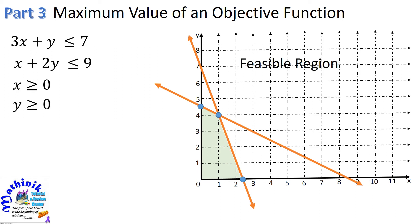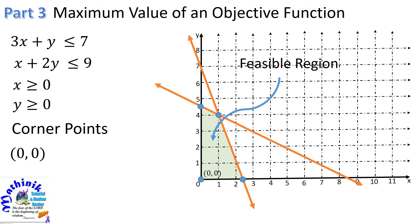For our problem, we call this the feasible region. All the coordinates of points in this region will give positive values to our objective function. To find the maximum, we will use the corner points — the intersections of the boundary equations from our constraints. The first corner point is (0, 0), the intersection of x equals 0 and y equals 0. The next is (2⅓, 0), which is the intersection of y equals 0 and 3x plus y equals 7, or just the x-intercept of the line 3x plus y equals 7.